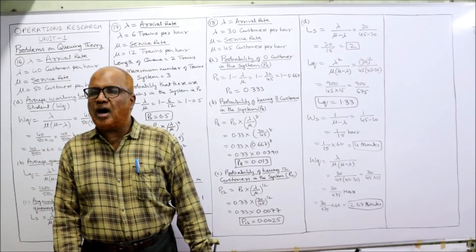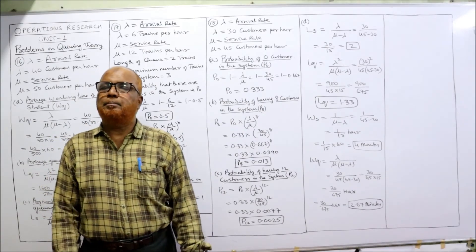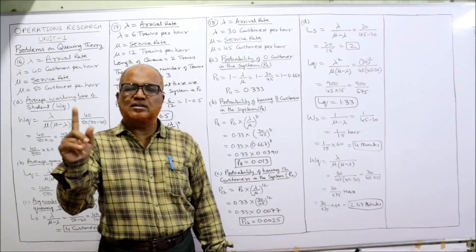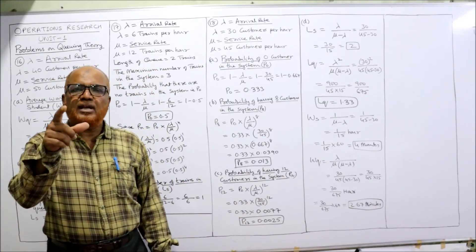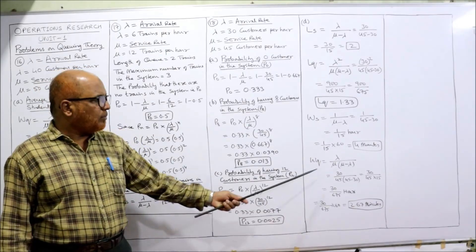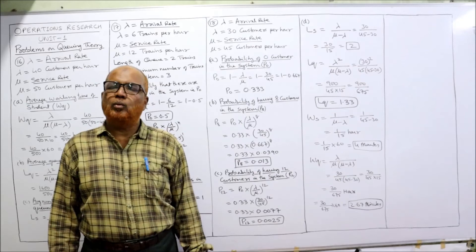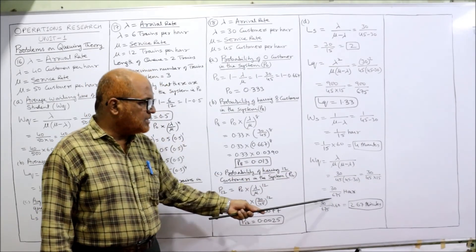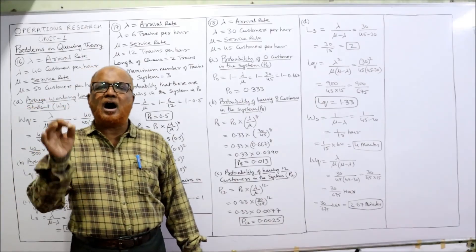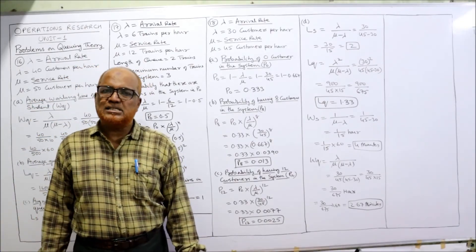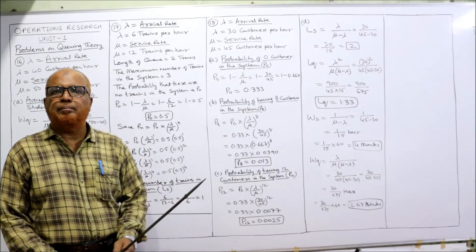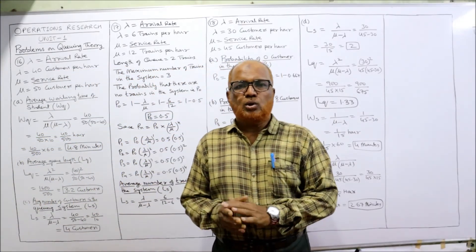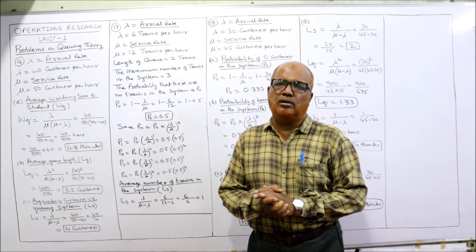Time is measured in hours, so to convert to minutes multiply by 60: WS = 1/15 times 60 = 4 minutes. Last one — WQ, average waiting time of a customer in the queue. Formula: WQ = λ divided by μ times (μ minus λ) = 30 divided by 45 times (45 minus 30) = 30/675 hours. Multiply by 60: WQ = 2.67 minutes. This is the end of the 18th and last problem on queuing theory.